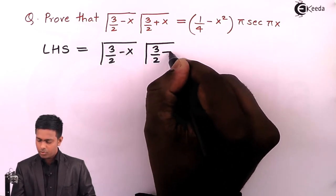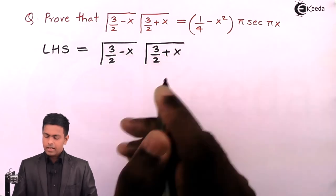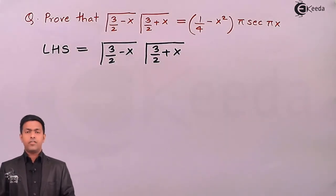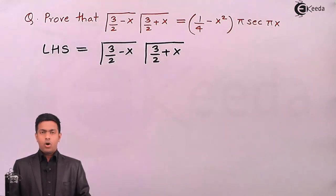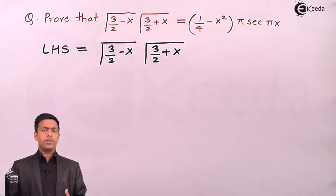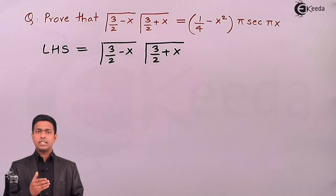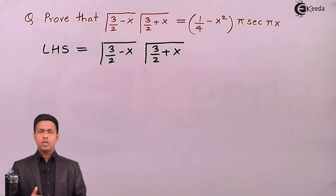Since on the right-hand side we want 1/4 - x², we cannot continue with the 3/2 term. We have to reduce this 3/2 term into 1/2 so that 1/2 and 1/2 can become 1/4. For that, I will use the property of gamma function.